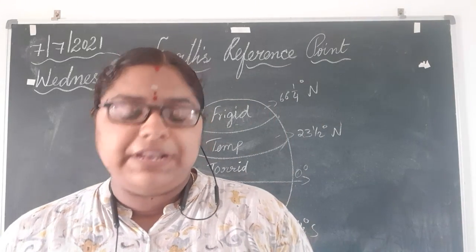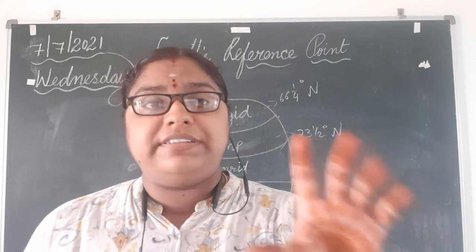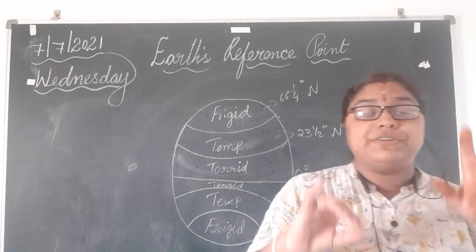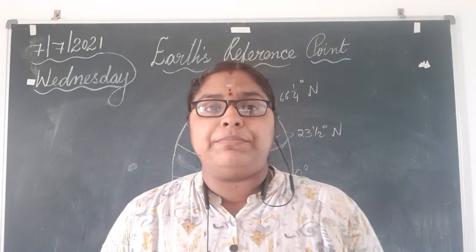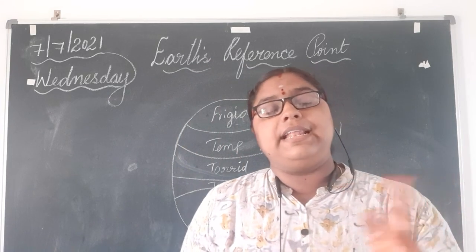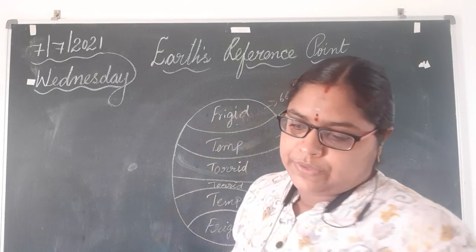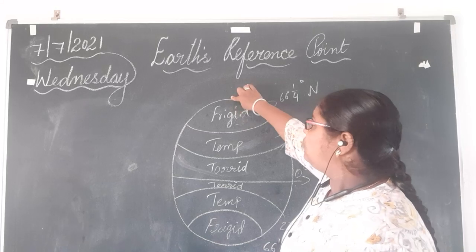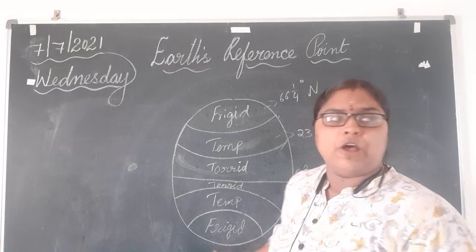The Frigid Zone is the coldest zone where the sun shines only for 6 months. It extends from the Arctic Circle to the North Pole in the north, and from the Antarctic Circle to the South Pole in the south.